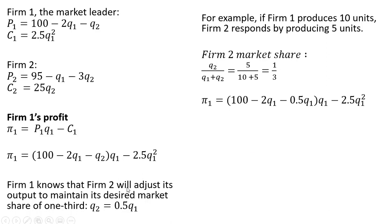So what we're going to do now is where we see this q subscript two in firm one's profit function, we're going to replace that with 0.5q subscript one, making that substitution. And now we're going to maximize. We've got one equation with one choice variable, so we're going to take the derivative of this profit function with respect to firm one's output.